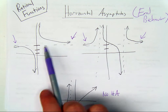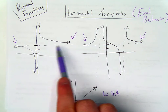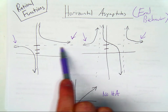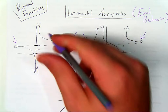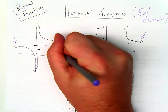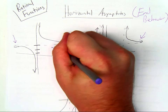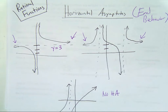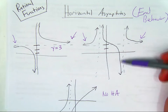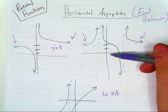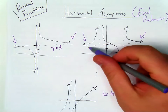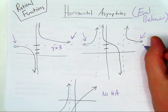You can see on this graph that the graph is approaching the line y equals 3. So this graph has a horizontal asymptote at y equals 3. This graph over here would have a horizontal asymptote at y equals 2.